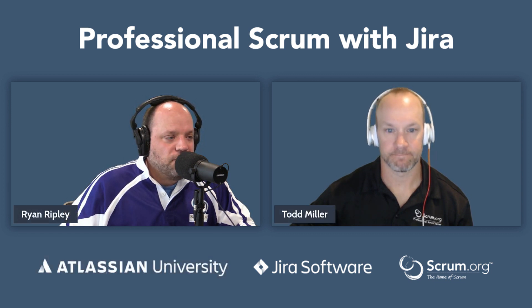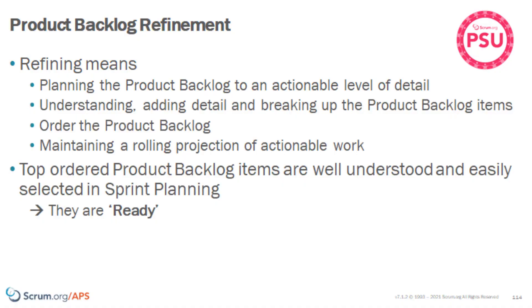Today we have a fascinating topic: product backlog refinement. I want to make sure we define this before we get too deep. Refinement — what it actually means from a professional scrum stance — is we're going to plan the product backlog to an actionable level of detail. We're trying to add understanding and transparency to the product backlog. So we're going to add detail, break up product backlog items, and order the product backlog by some form of value. It's also maintaining a rolling projection of actionable work.